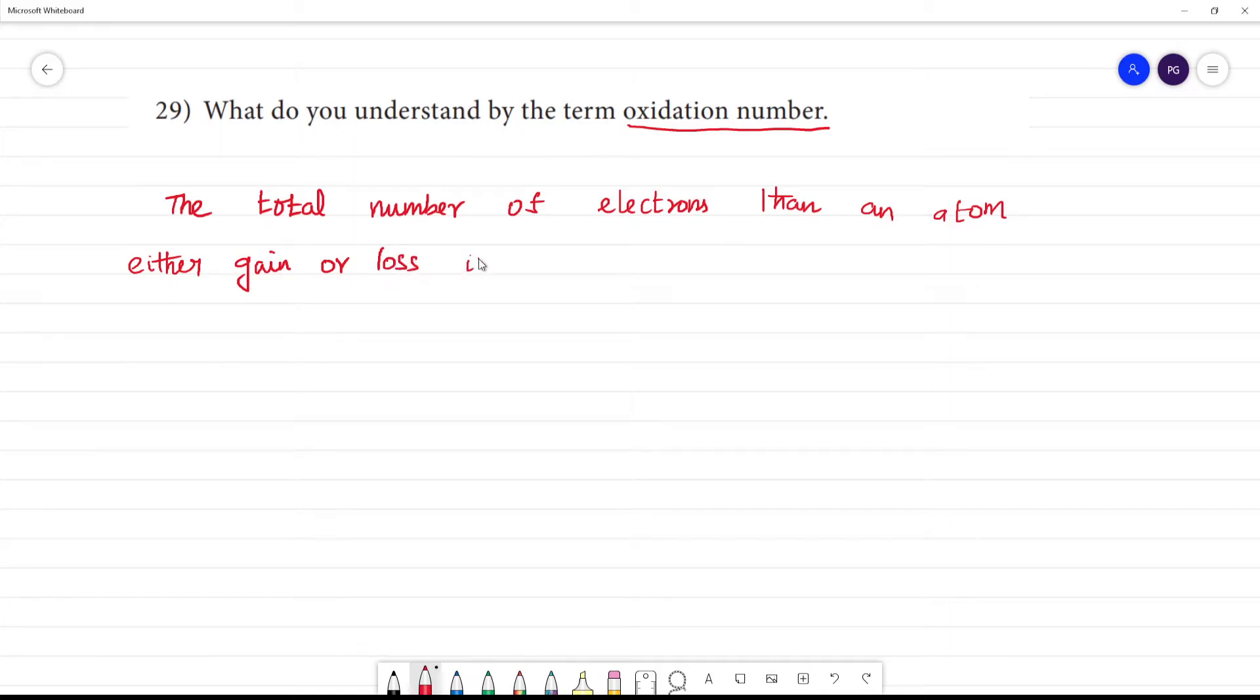Gain or loss of electrons in order to form a chemical bond.